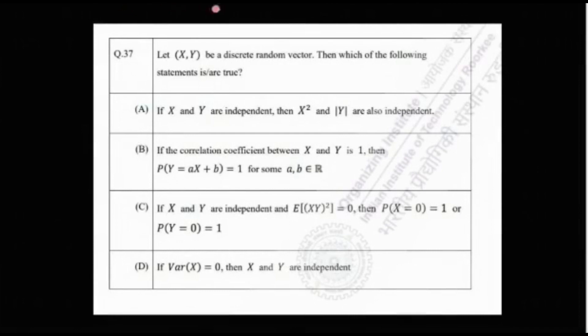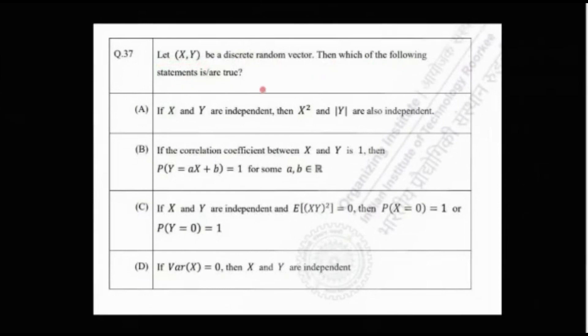The problem says that let (X, Y) be a discrete random vector, then which of the following statements is or are true. There are four options and this is a multiple select question, meaning more than one option may be correct.